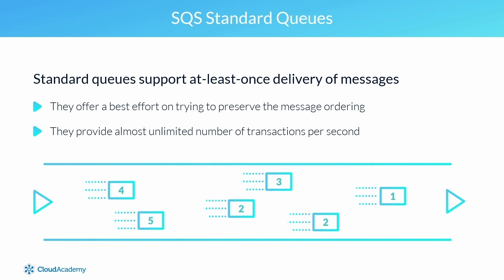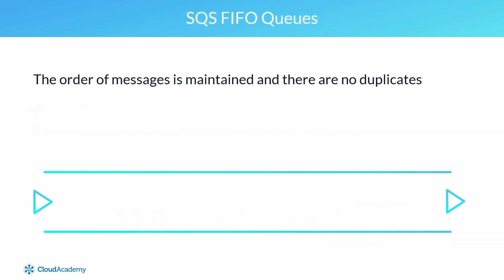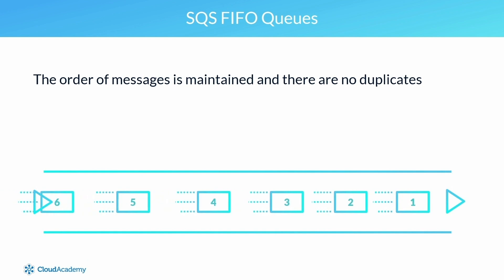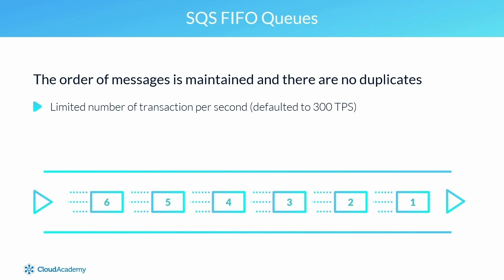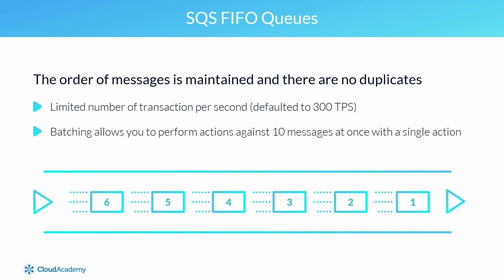Standard queues also offer an almost unlimited number of transactions per second (TPS), making this queue highly scalable. Instead, if ordering is required, you would use first-in, first-out queues. FIFO queues ensure the order of messages is maintained and that there are no duplications within the queue. Unlike standard queues, FIFO queues have a limited number of transactions per second — defaulted to 300 per second for all send, receive, and delete operations. If you use batching with SQS, then this changes to 3,000.